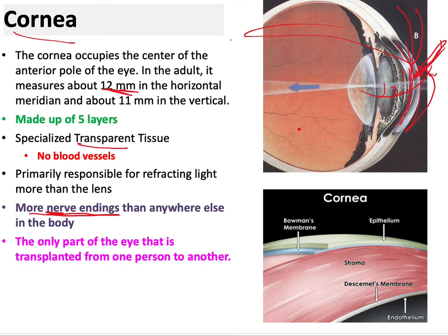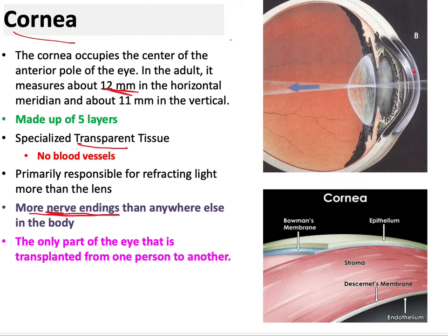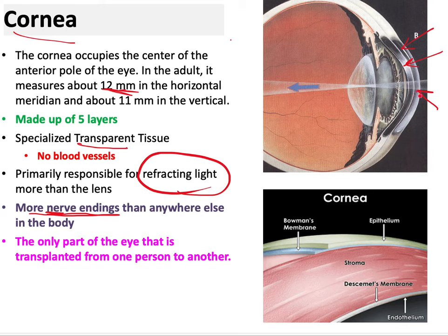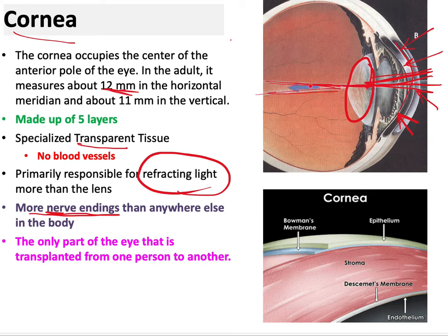The cornea can be transplanted from one person to another — it is the only part of the eye that can be transplanted. Its main function is to refract light: it concentrates and focuses light, and with the help of the lens, forms the image on the retina. The cornea is actually responsible for more refraction than the lens.